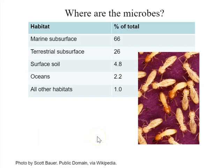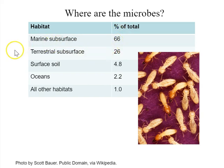Where are microbes from the point of view of planet Earth? If we zoom back out and look at our planet, let's think about the different types of habitats that can support microbial growth. A ton of microbes are found in the marine subsurface — deep in the oceans, in the sediments — which is rich in microbial life. The terrestrial subsurface, just below the Earth's surface and crust, accounts for about 26% of the total microbes known to exist on Earth.